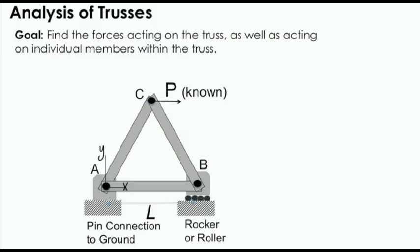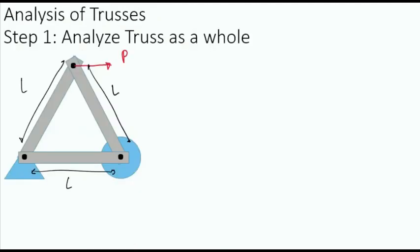The goal in truss analysis is to find the forces acting on the truss, as well as the forces in the individual members of the truss, given an applied load. Let's look at our truss structure to understand how this can be done. Here we have an applied load P, which is known at C. We want to see how this affects the reaction forces on the truss, as well as the forces in the individual members. The first step in any truss analysis is to analyze the truss as a whole given an applied load. To accomplish this, we will choose the whole truss members, excluding the pin and roller support, as our system.